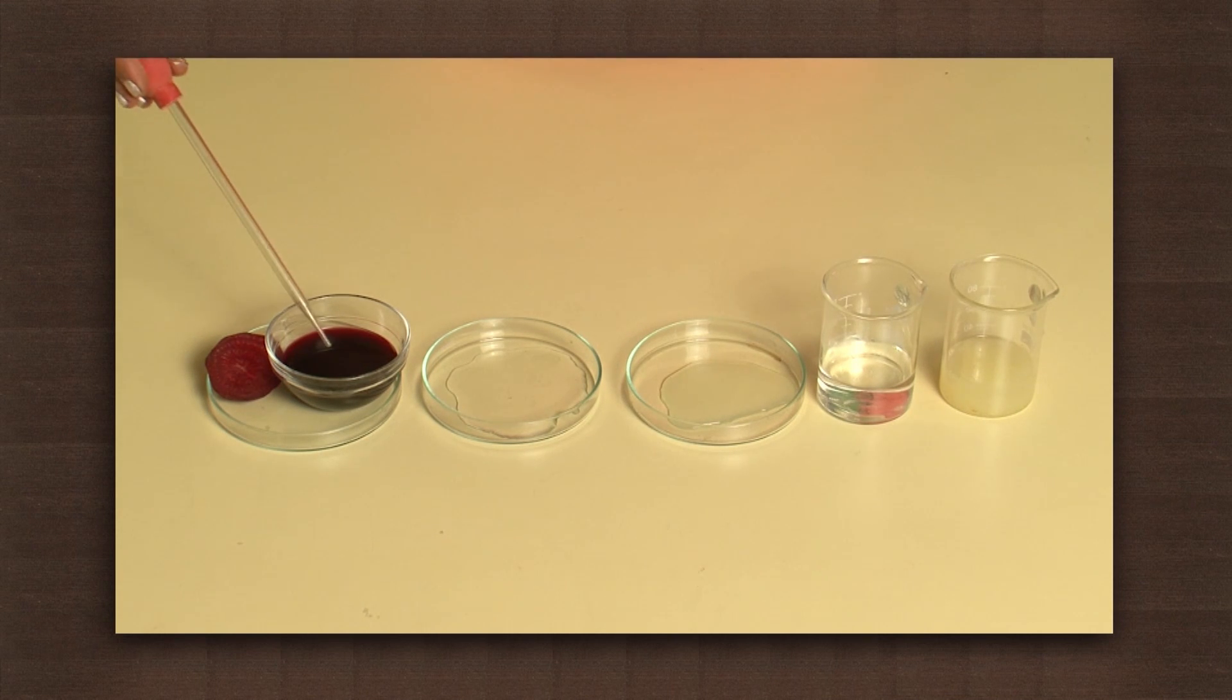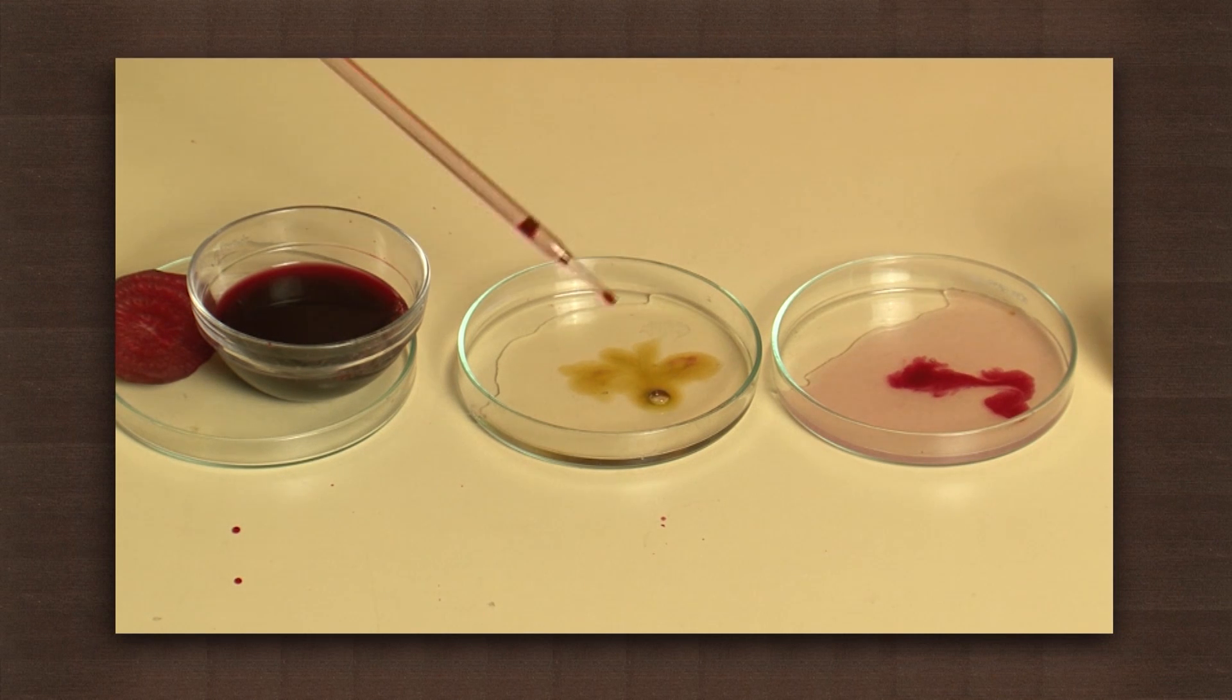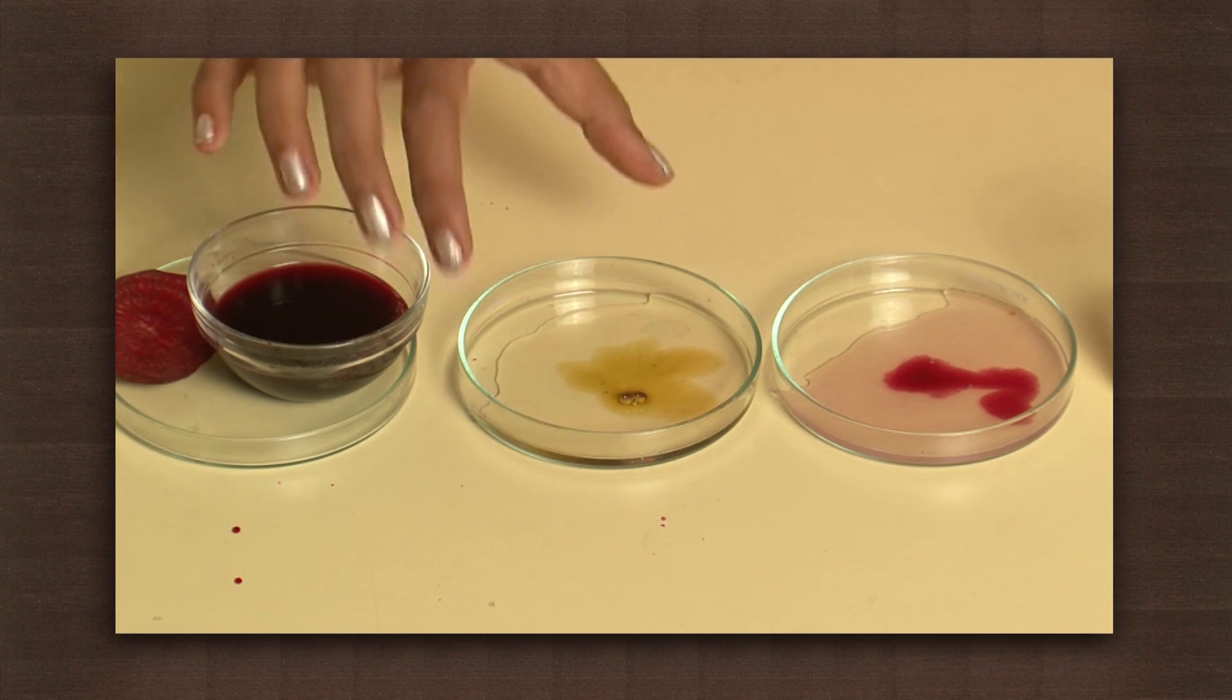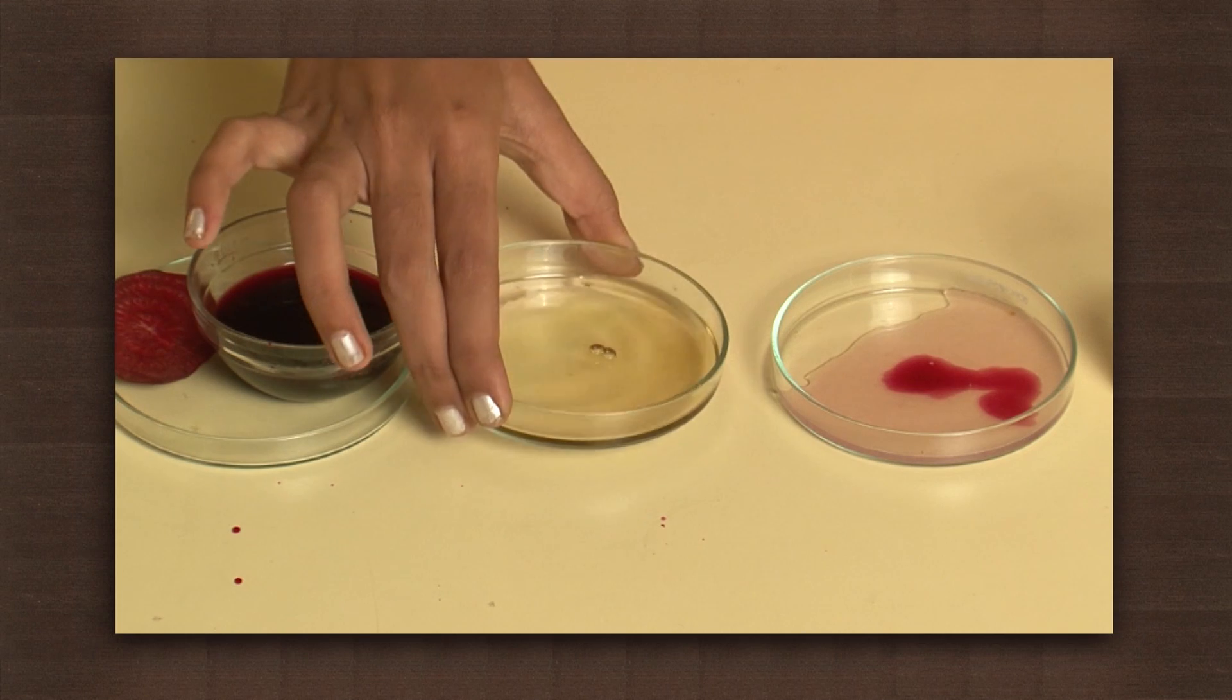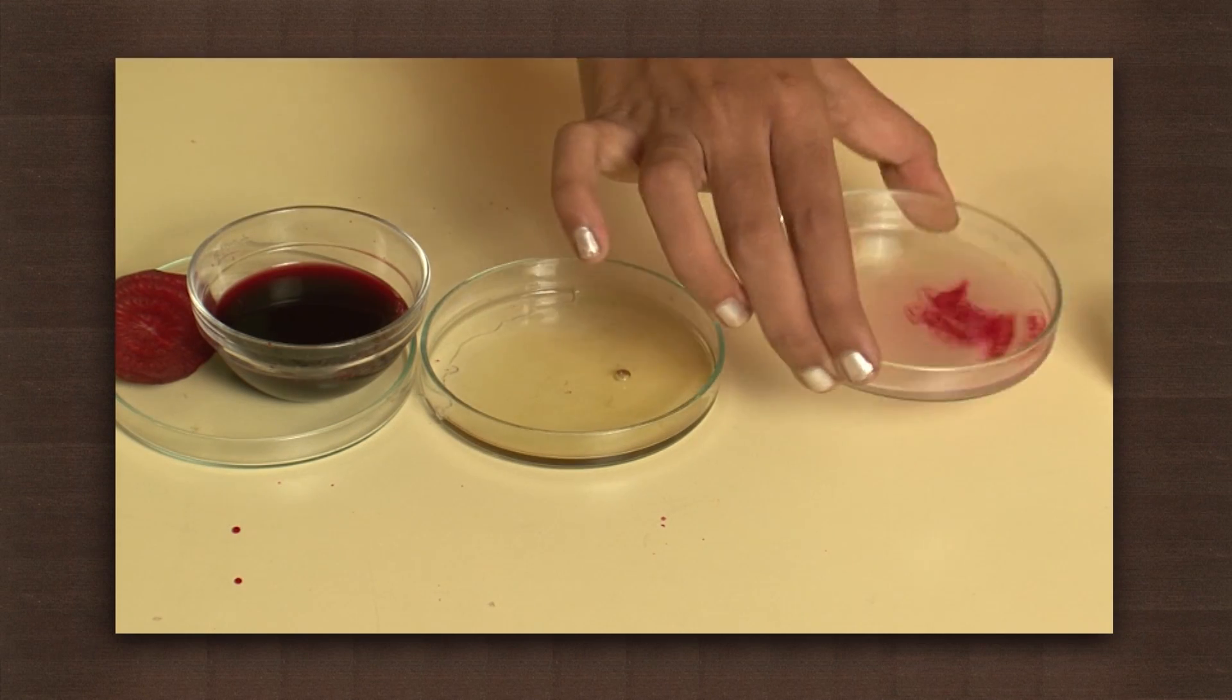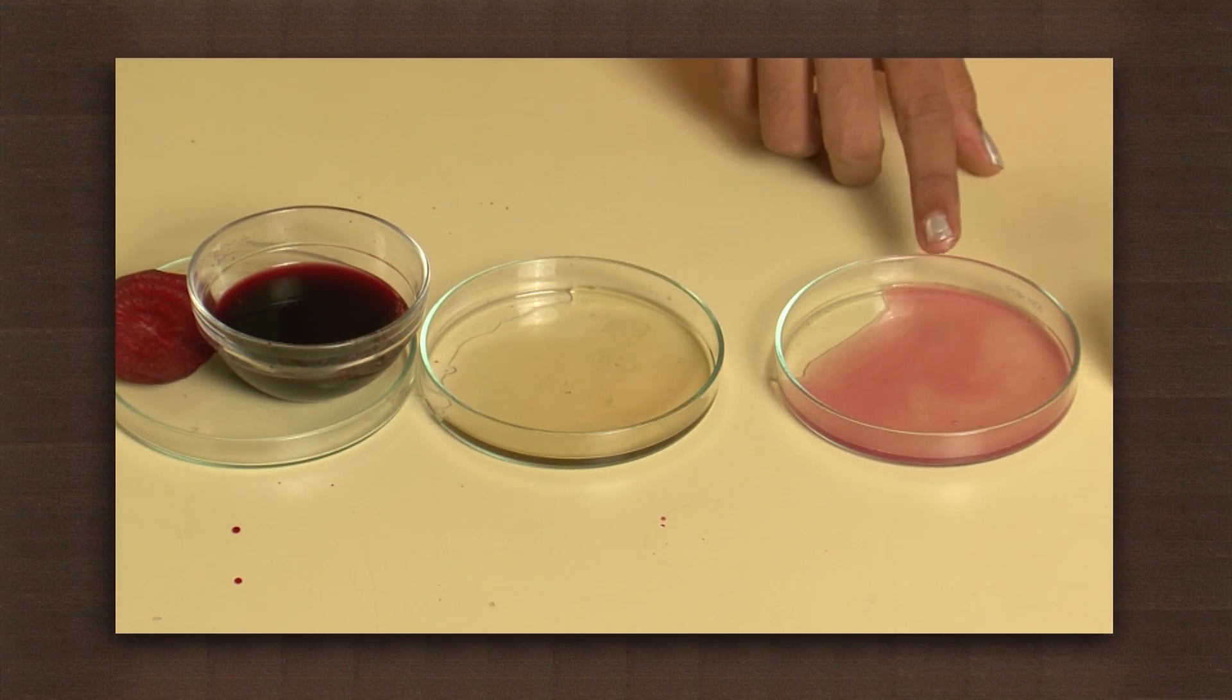Put a few drops of beetroot juice in both of them. Sodium hydroxide, which is a base, becomes yellow-green, while lemon juice remains unaffected. So beetroot juice can be used to test if a substance is basic in nature.